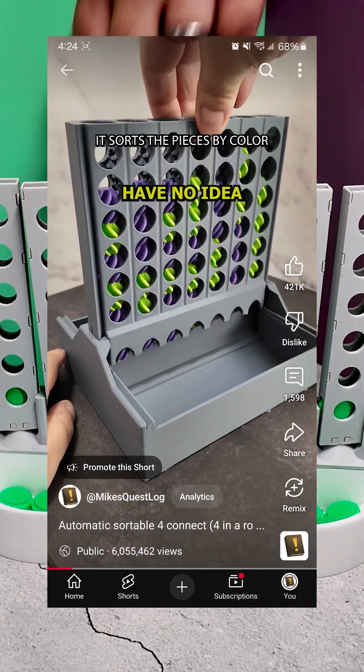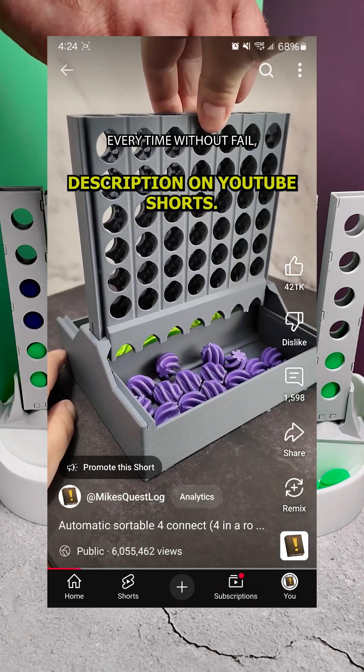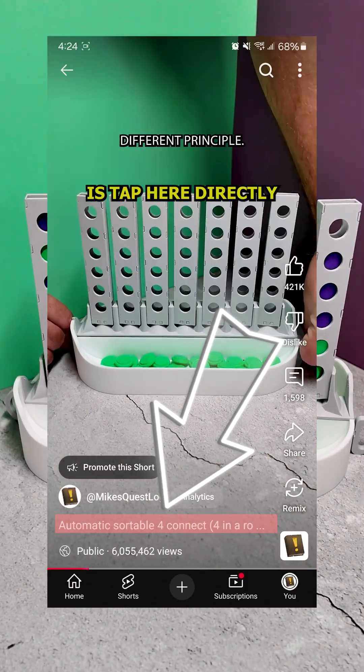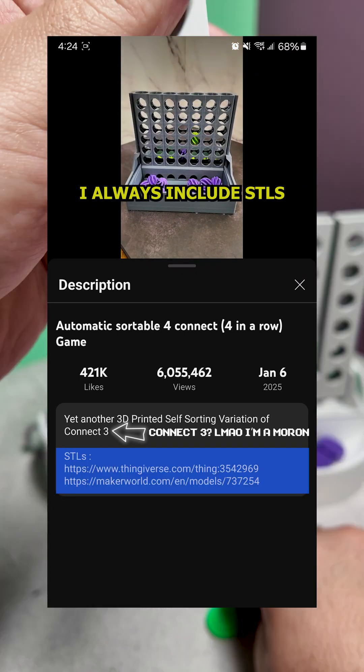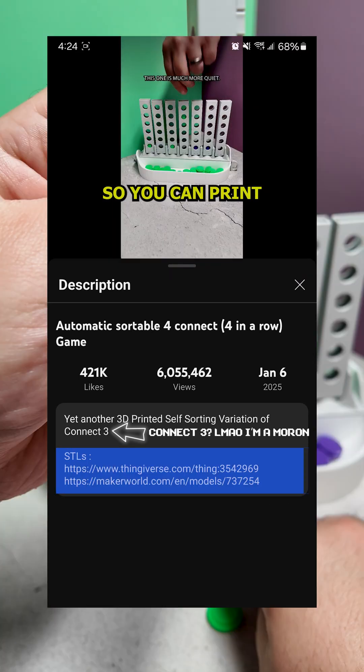Also, it appears that many people have no idea how to access the video description on YouTube shorts. All you have to do is tap here directly on the video title, and the description shows. I always include STLs and links to original creators in there, so you can print all the models yourself.